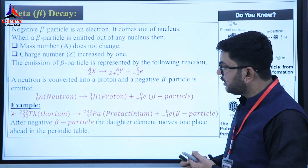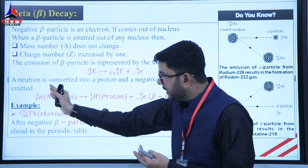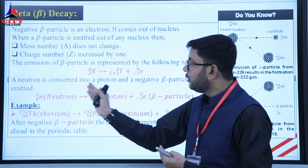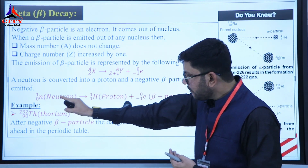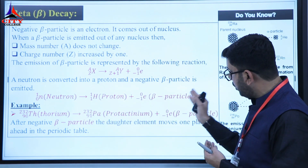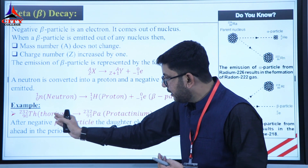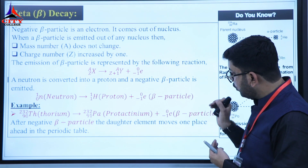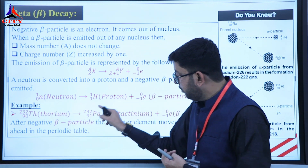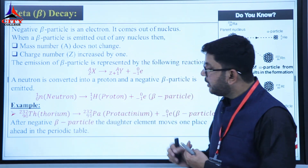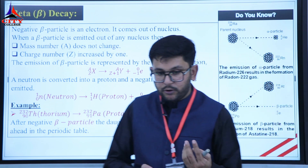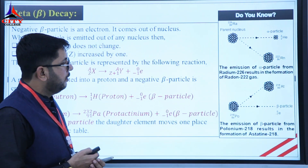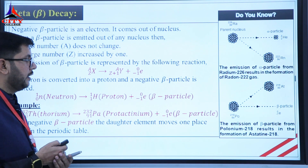A neutron converts into a proton and a negative beta particle, which is emitted. For example, thorium converts into protactinium: the mass number remains the same, while the charge number increases by one. This example is also mentioned in your book.